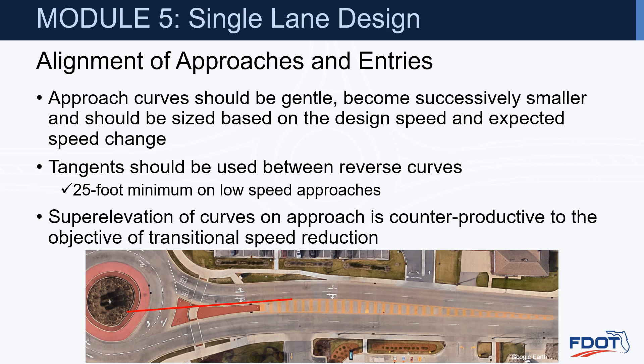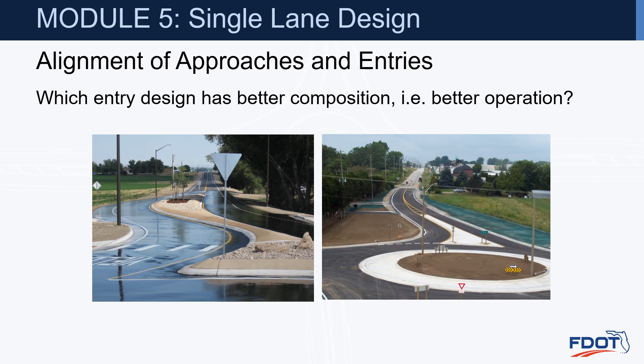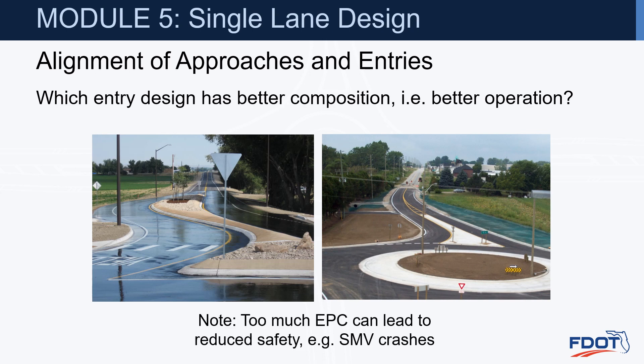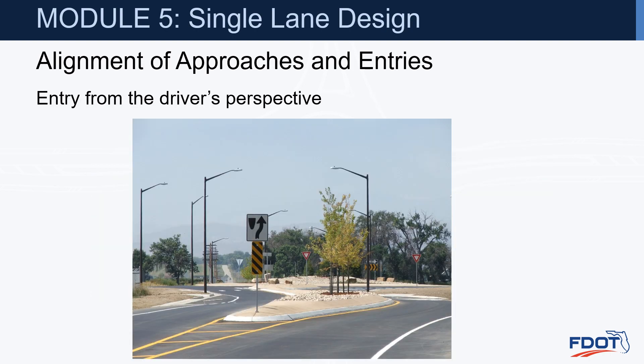Here again is an example of the offset left design. Comparing two entry designs, the one on the left has a pretty large chicane — it will definitely control entry speeds. But we would argue the one on the right has similar speed control with less curvature. The point is that you can overdo it — too much entry path curvature can lead to reduced safety and the potential for single motor vehicle crashes if radiuses are too sharp. There can also be issues with landscaping blocking sight of the approach and the yield sign.